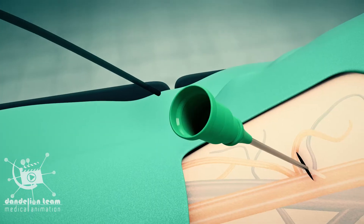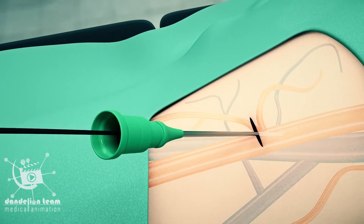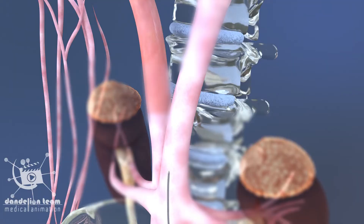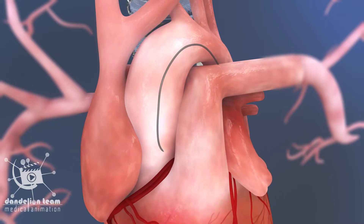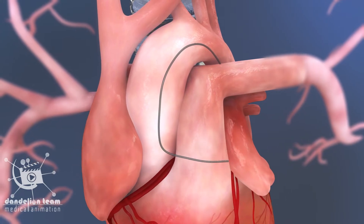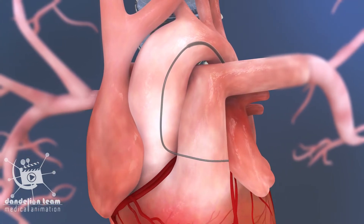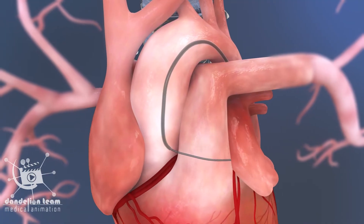A thin, flexible guide will be inserted through the needle into the artery up to your heart via the arterial system. Once at the heart, a flexible tube called a catheter will be advanced through the wire to your coronary arteries.